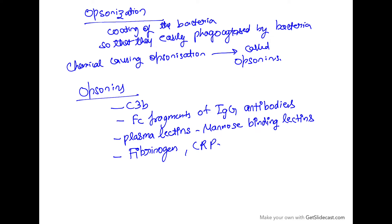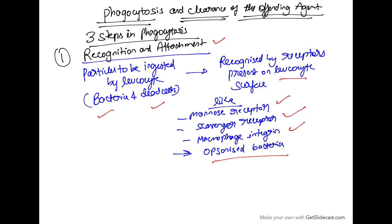What is opsonization? Opsonization means coating of the bacteria so that they can be easily phagocytosed. The chemicals which cause opsonization are called opsonins. To name a few opsonins: C3b, Fc fragment of IgG antibodies, plasma lectins like mannose-binding lectins, fibrinogen, and CRP. So the first step involves recognition and attachment to the leukocyte surface.